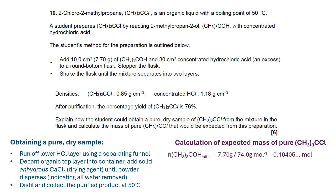Now, calculating the expected mass: we work out the initial moles of 2-methylpropan-2-ol by taking the number of grams provided and dividing it by the molar mass, which gives 0.10405 moles. I'm using the full calculator value and retaining it throughout until the very end. The Cl in (CH₃)₃CCl is being substituted by OH in a 1-to-1 ratio, so it must be a 1-to-1 ratio in the balanced equation. We can assume the expected moles assuming 100% yield would also be 0.10405 moles.